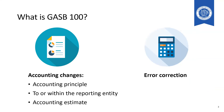GASB 100 is the new accounting standard that addresses accounting and financial reporting for accounting changes and error corrections. The standard covers three accounting changes: changes in accounting principle, changes to or within the reporting entity, and changes in accounting estimates. The standard also identifies and covers error corrections.